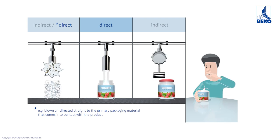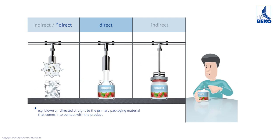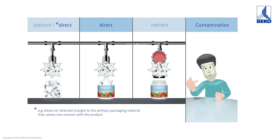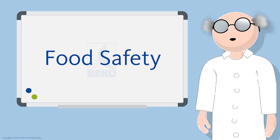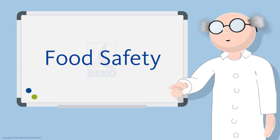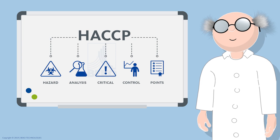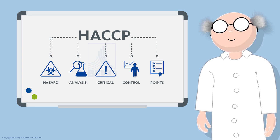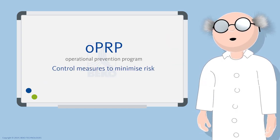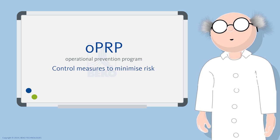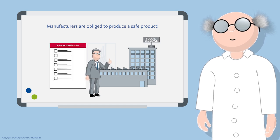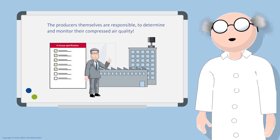Contamination by microorganisms, oils, or particles can contaminate the end product in both indirect and direct contact and cause an enormous loss of quality. There are different and effective approaches to ensure food safety — for example, the HACCP, a management system for hazard analysis and definition of critical control points, as well as additional processes like the Operational Preventive Program (OPRP) to measure, control, and minimize risks.